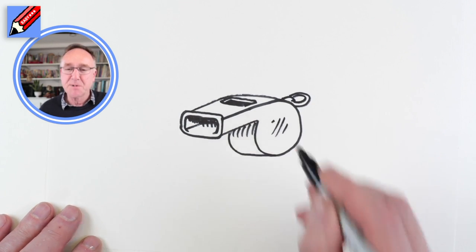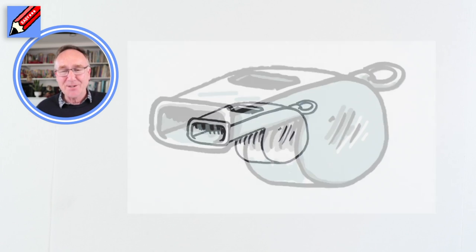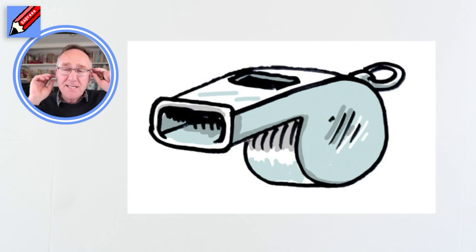If it's metal you can give it a bit of shininess too. And there you go, how to draw a whistle real easy.